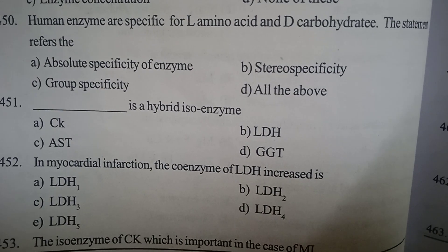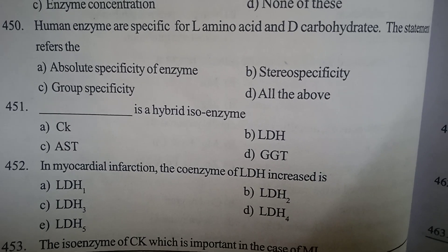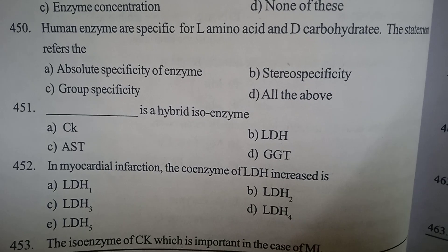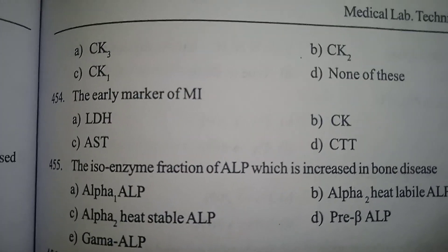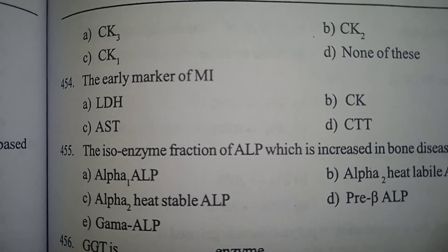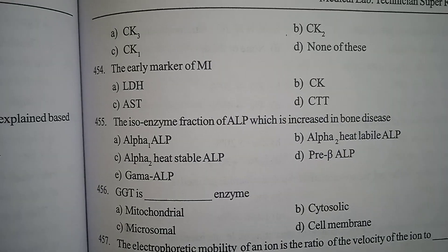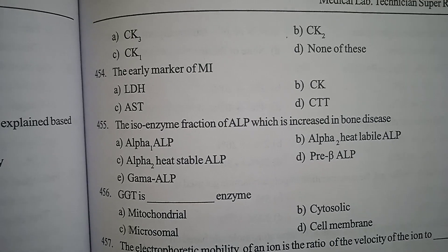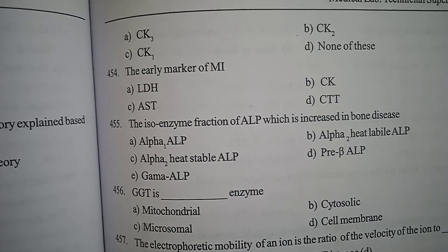Question 8: The isoenzyme of creatine kinase which is important in the case of myocardial infarction — Option A: CK3, Option B: CK2, Option C: CK1, Option D: None of these. Creatine kinase has three isoenzymes. CK2 is CKMB, which is important in myocardial infarction. Correct answer: CK2.